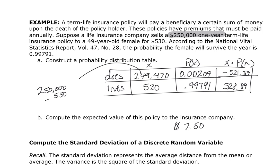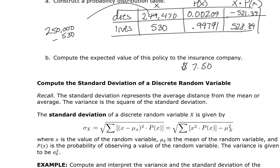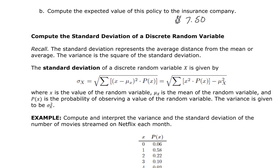So insurance companies are expecting you to live, and every time you do live they have made $7.50 on you, basically.